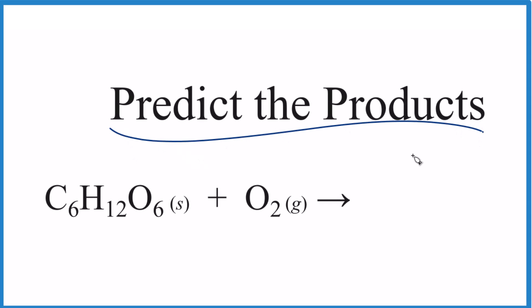Here's how you predict the products of the chemical reaction C6H12O6 plus O2. We have glucose and oxygen.